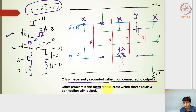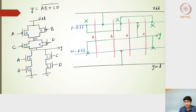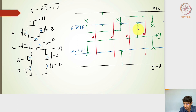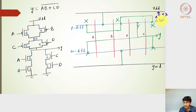One solution to avoid the metal track intersection is to route the X connection to the other side, but that would increase area due to the 4-lambda spacing requirement. Even doing this still forces C to ground on the pull-down side. That's why the ordering of the polysilicon gates needs to be changed. Instead of ABCD, we use ABDC — D comes before C.